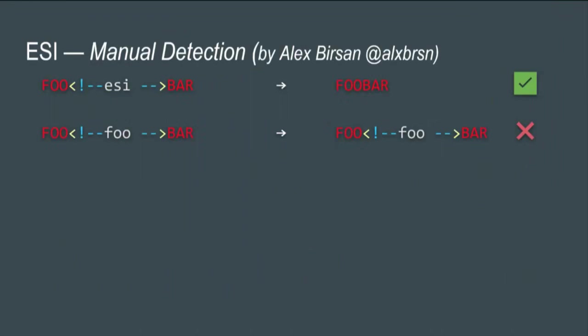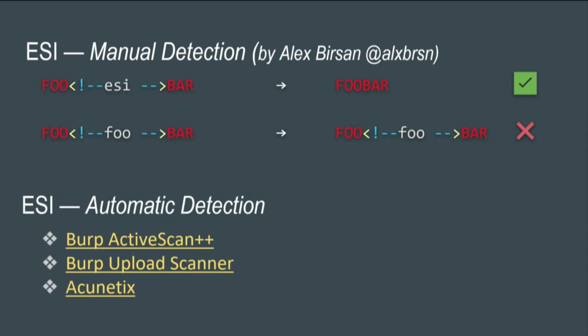If you want to do ESI injection, you first need to identify if you're dealing with an ESI-enabled caching server. Someone on Twitter called Alex Bursant came up with a smart solution: leveraging ESI comments. ESI comments are tags that get stripped by an ESI-enabled server. If an HTML comment-looking ESI tag is removed from the HTTP response, your ESI engine processed it. If you put something different — like 'foobar' — and it comes back, you're probably dealing with an ESI engine. For automatic detection, you can use Burp Active Scan++, Burp Upload Scanner, and Iconics, which all detect ESI injections using this heuristic.